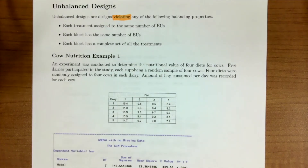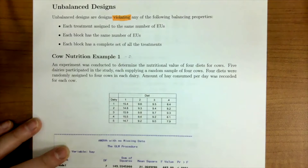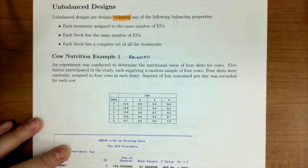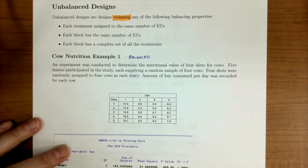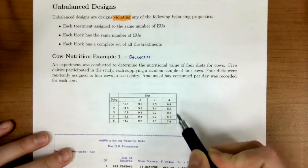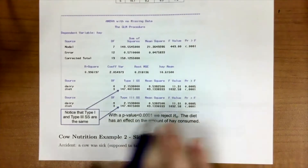To help motivate an important aspect of unbalanced designs, let's look at a cow nutrition example in a balanced case. An experimenter conducted an experiment to determine the nutritional value of four diets for cows. Five dairies participated, each supplying four cows. Four diets were randomly assigned to four cows in each dairy, monitoring hay consumed daily. Here's our dataset — no missing data, all under a balanced design, and here's our ANOVA table from SAS.